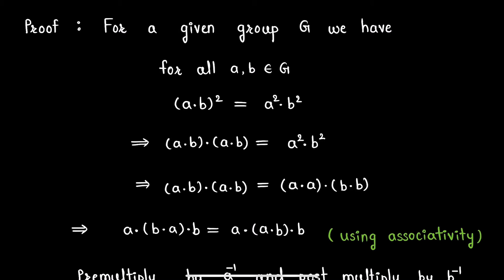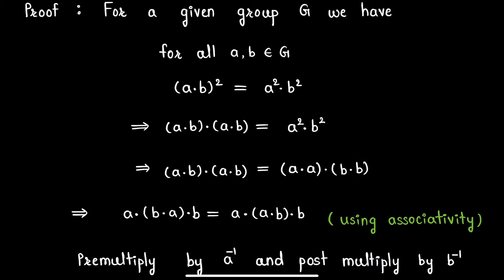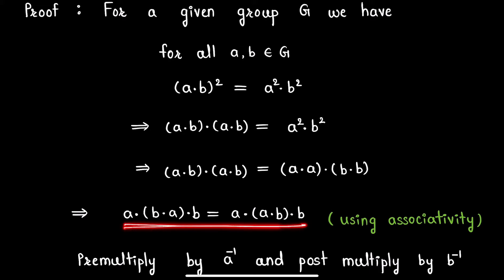The right-hand side will remain as it is. In the next step, a² can be written as a·a since a is an element of group G, and b² can be written as b·b since b is also an element of group G. Now in the next step we use associativity in group G, rewriting the expression as: a·b·a·b = a·a·b·b.